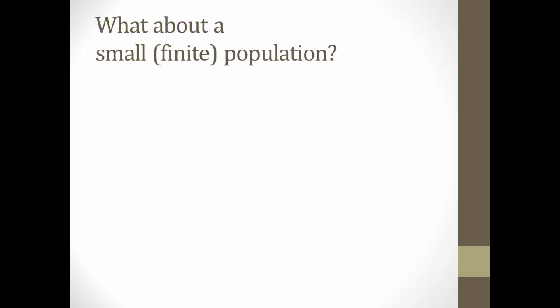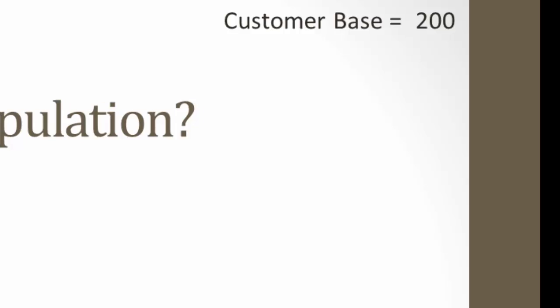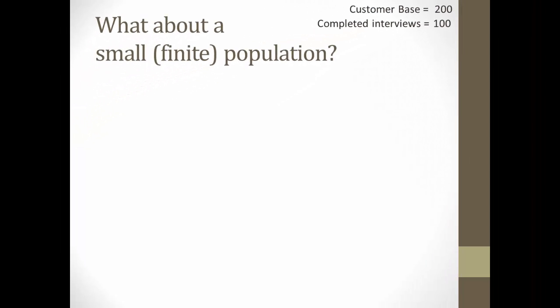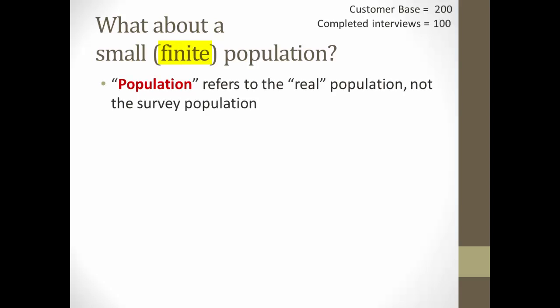Now, say you're conducting a customer satisfaction survey for a small business with, say, 200 customers. If you complete interviews with 100 of those customers, your results should be more accurate than the confidence intervals we've previously discussed, right? There should be less error. That's what we would call a finite population, and in this case, the word population refers to the real population, 200 customers in our example, not the survey population.